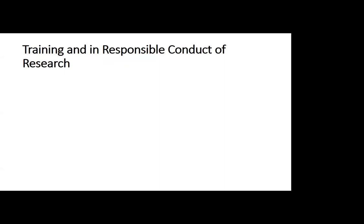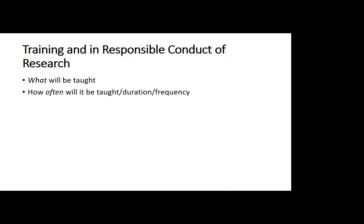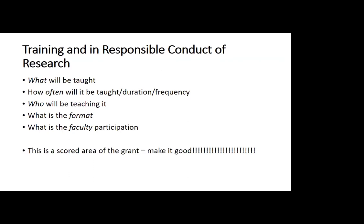We also look at training in responsible conduct of research. This is a scoreable section on your grant, so you do not want to put little time and effort into it. You and your mentor should write it together, along with help from the Associate Dean of Research. It should come from the institution and tell the granting organization what you're going to be taught, how often, the duration, the frequency, who's going to teach you responsible conduct and ethics, and what the format is — online, Zoom, or seminars. This is a scored area, so make it good. I have outstanding examples that have gotten rave reviews.